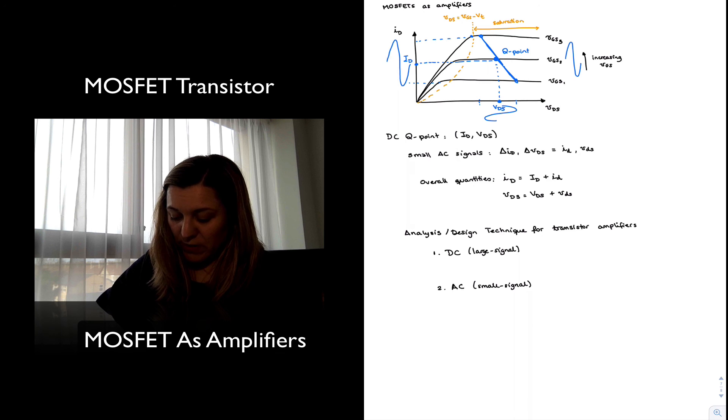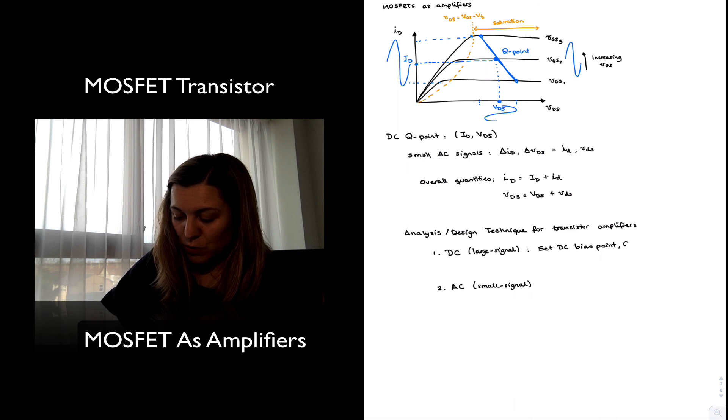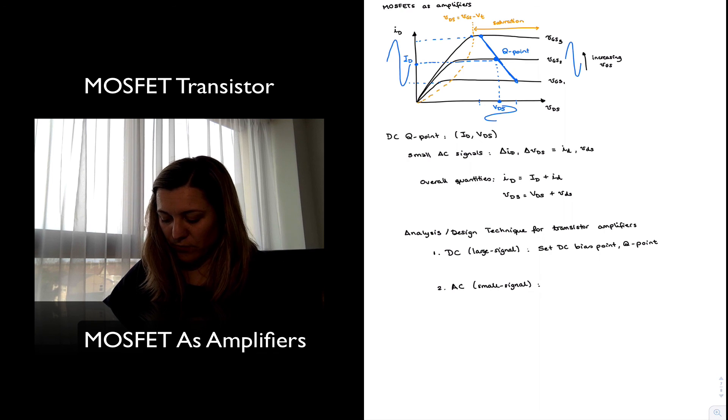So basically I will set up or calculate my DC bias point, also referred to as Q point, quiescent point, etc. And then I will set or calculate my small signal amplifier parameters.